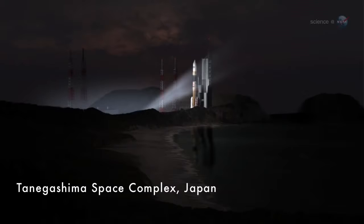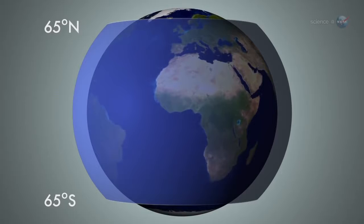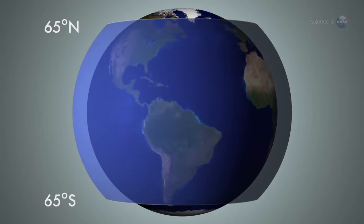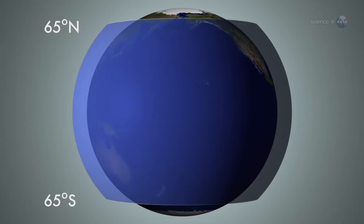GPM will fly 253 miles above Earth in an orbit inclined 65 degrees to the equator. This orbit allows the satellite to monitor precipitation all the way from the Arctic to the Antarctic circles.